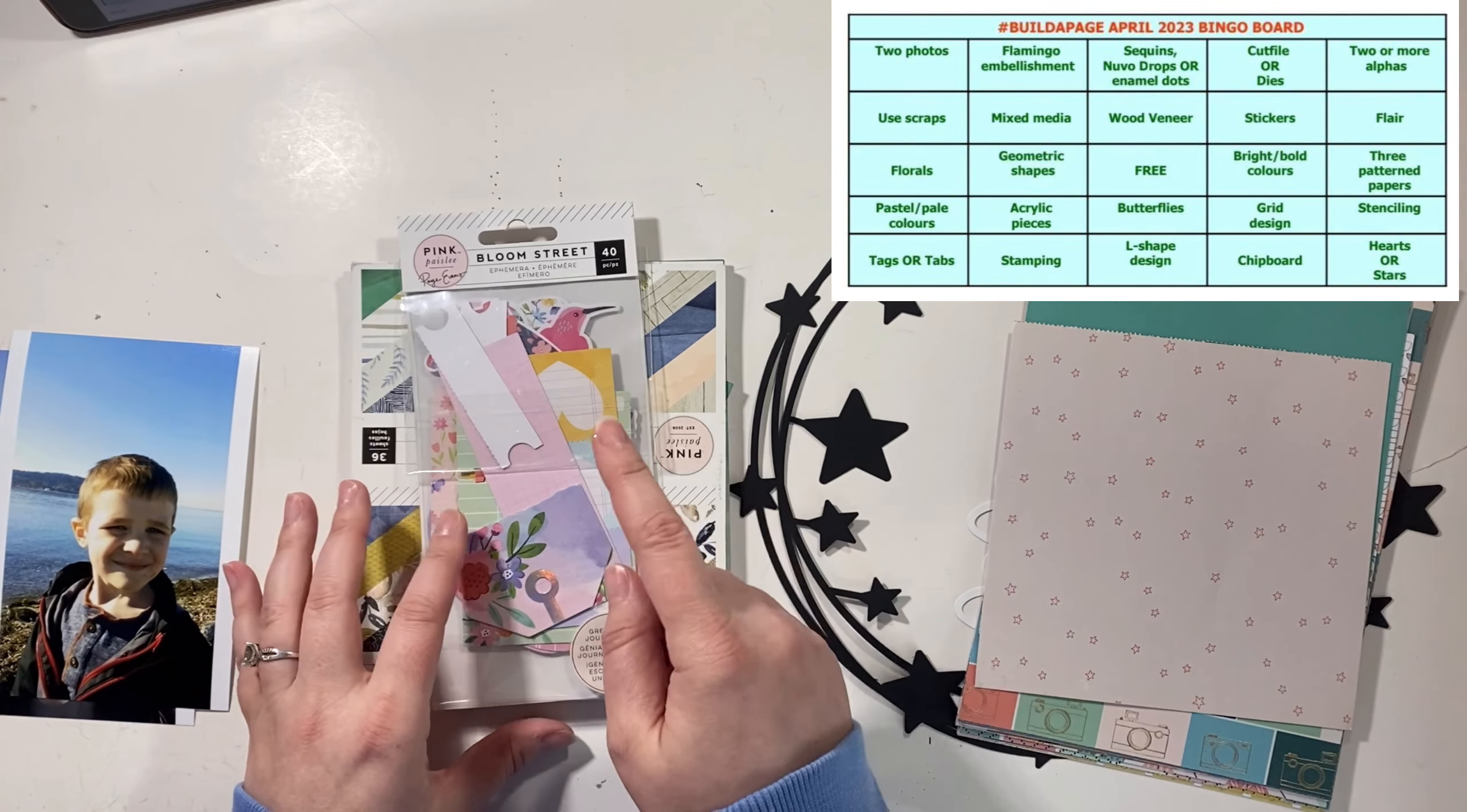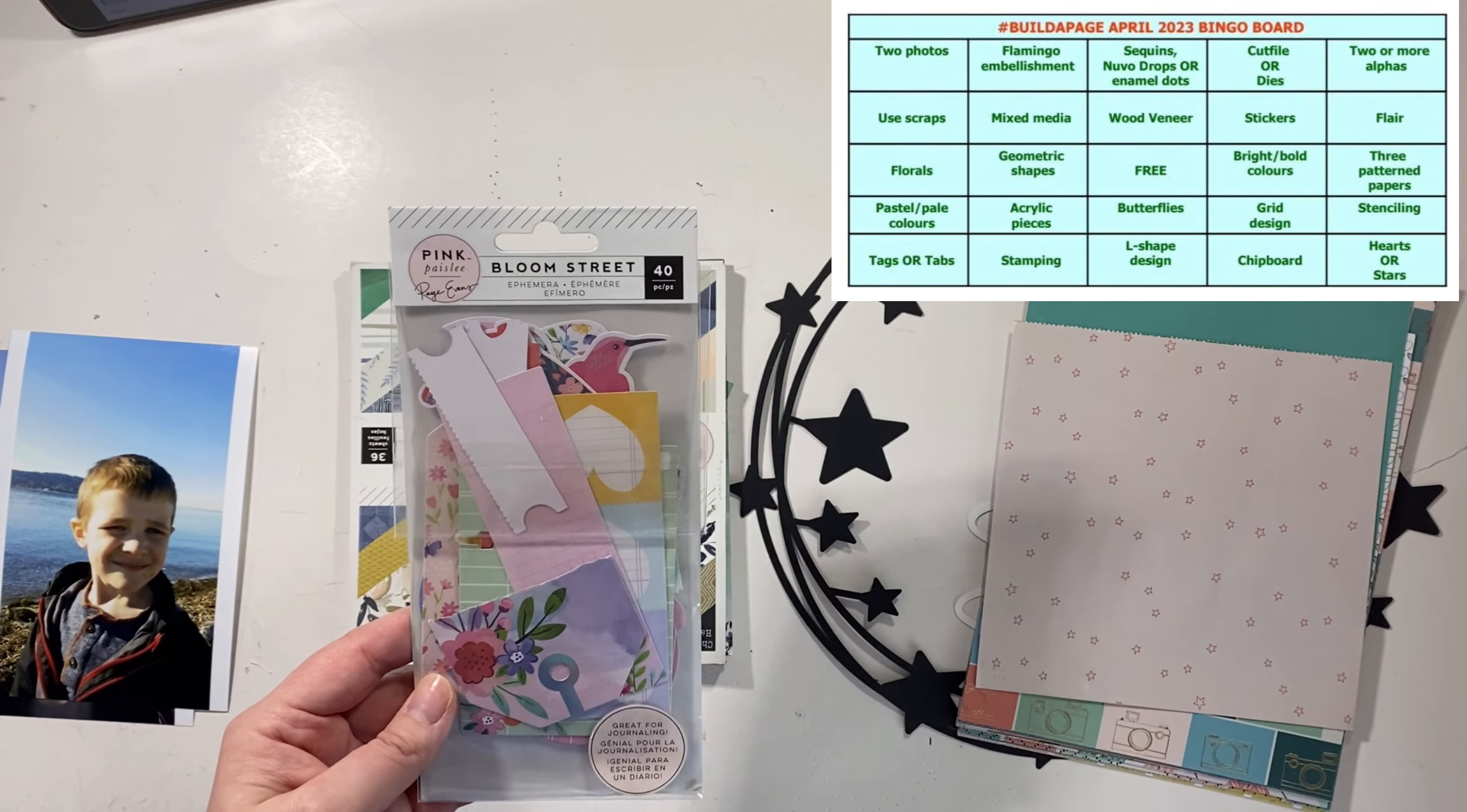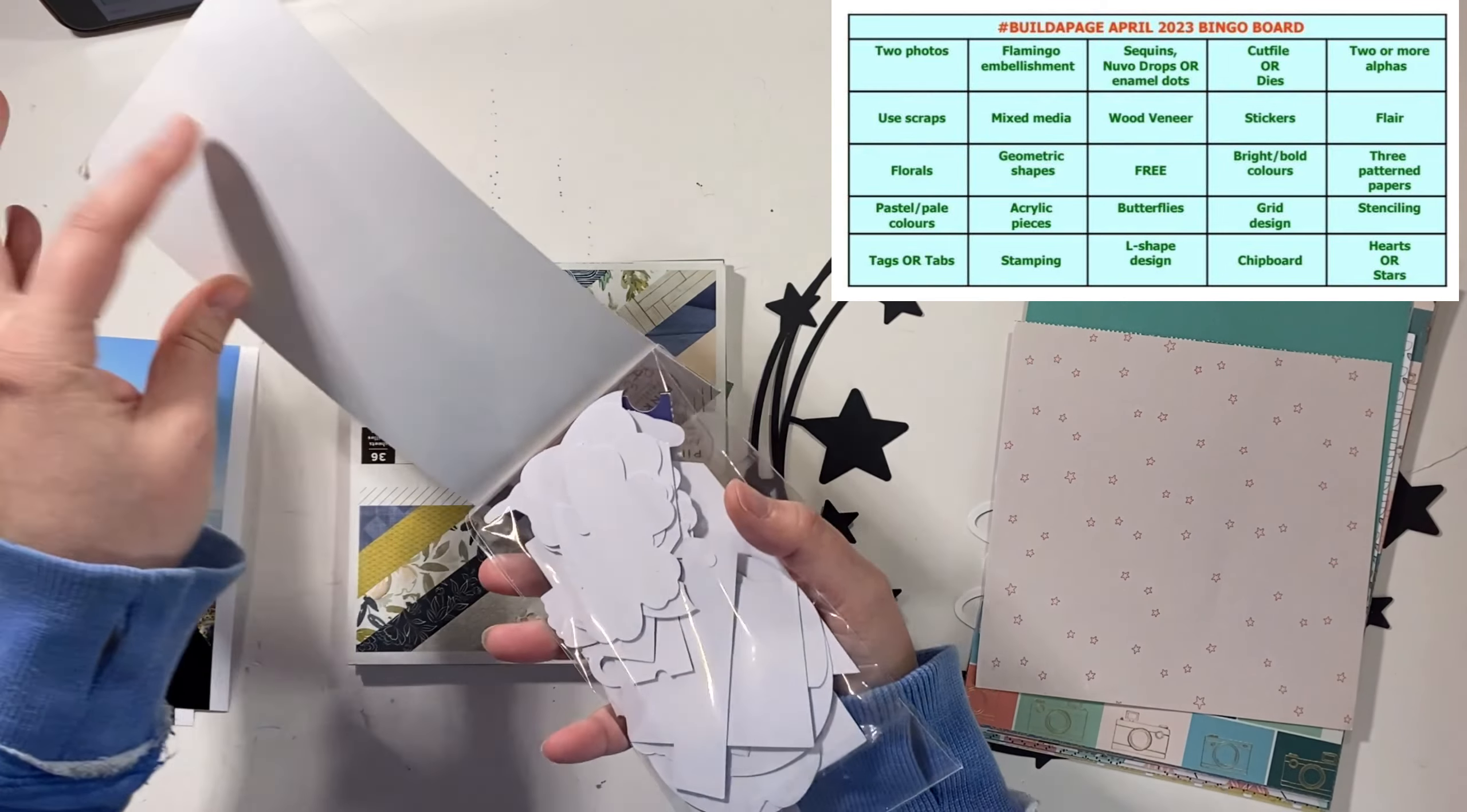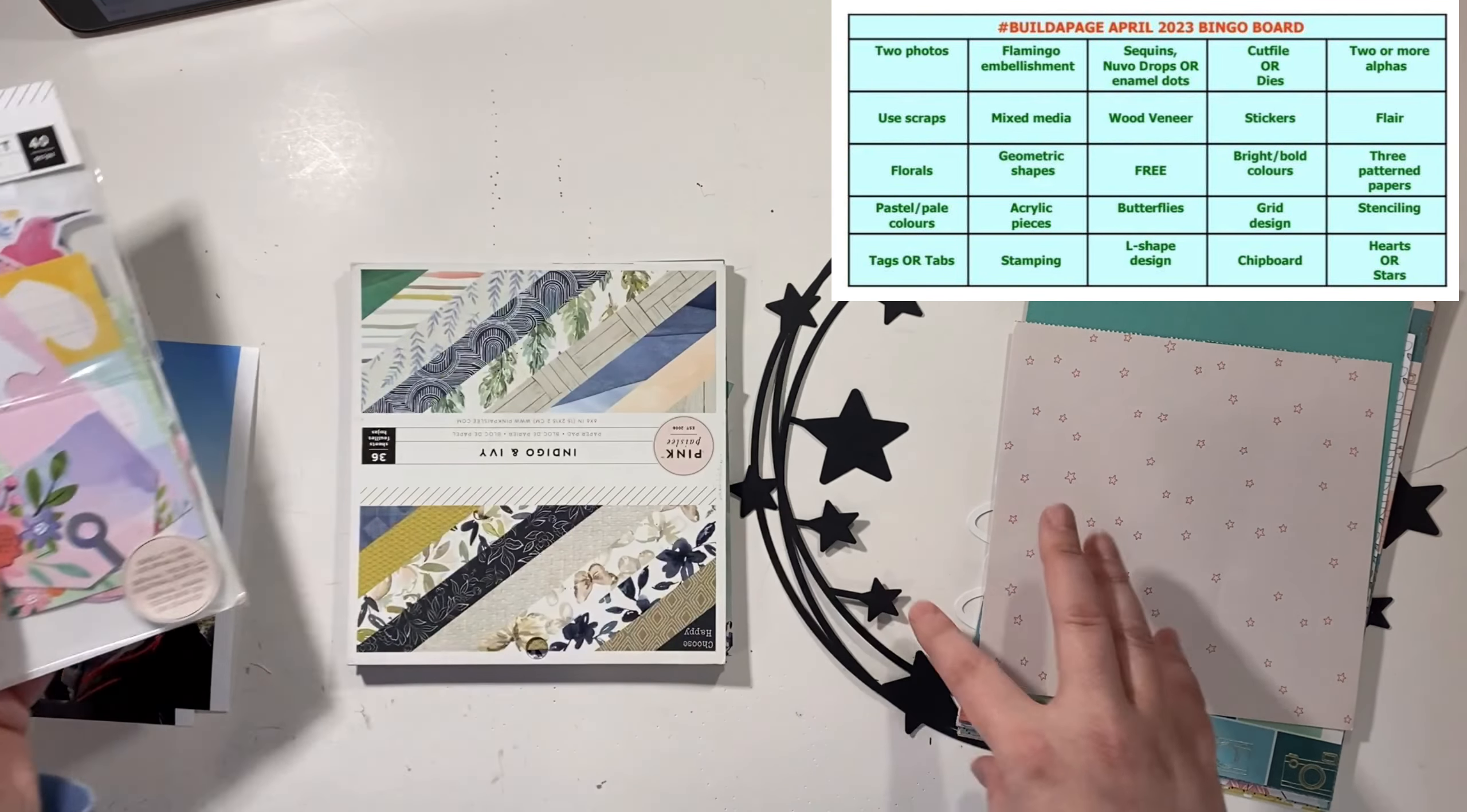I'm going to kind of mix the tags and tabs with the pastel pale colors with this Bloom Street collection. I think it may have some floral in it even. I thought I probably can make it work with just this one collection pack, so I'm pulling that in.